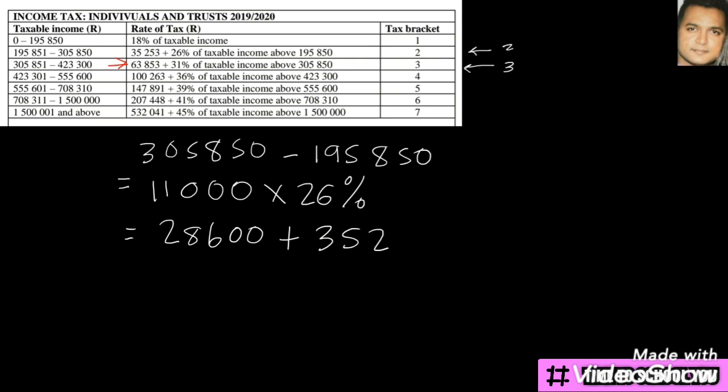When we add this, we see that we arrive at 63,853, and that's the amount you find in tax bracket three. That's the amount they ask us to work out.